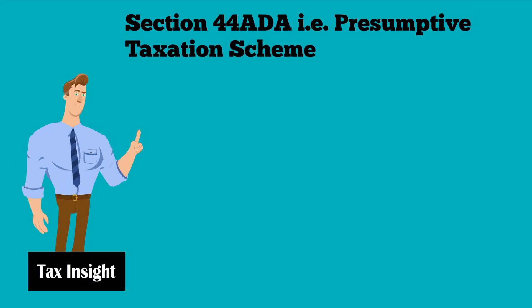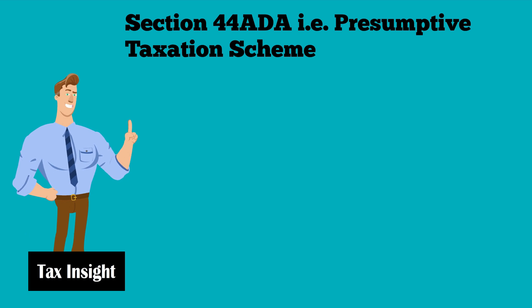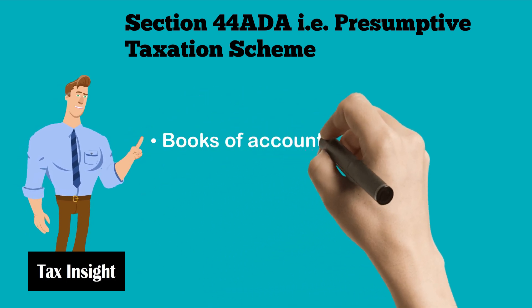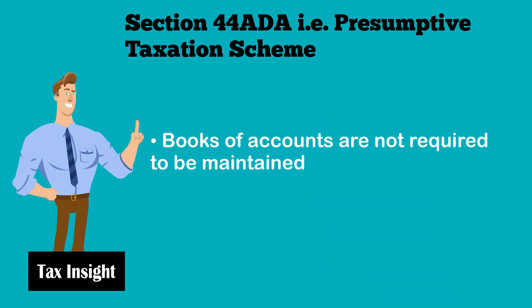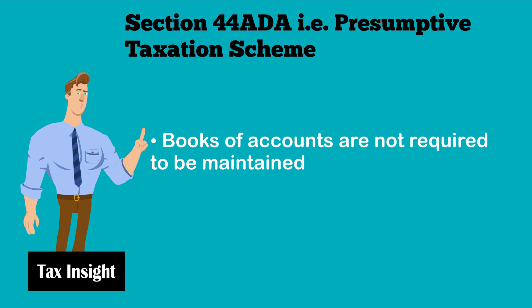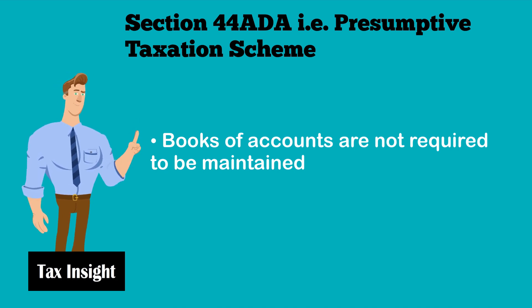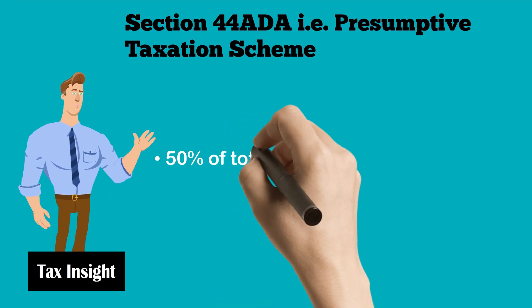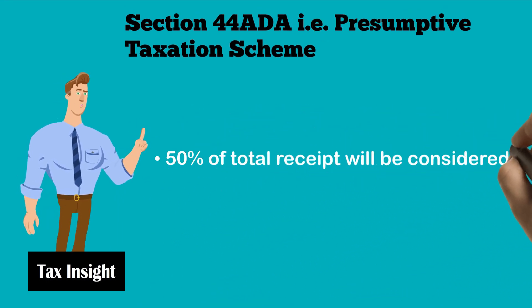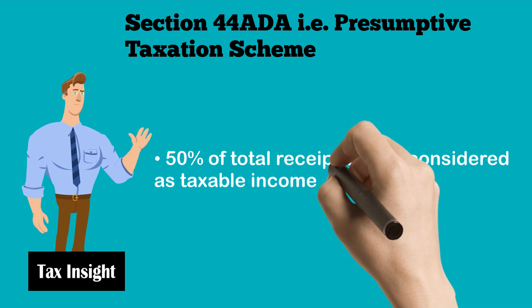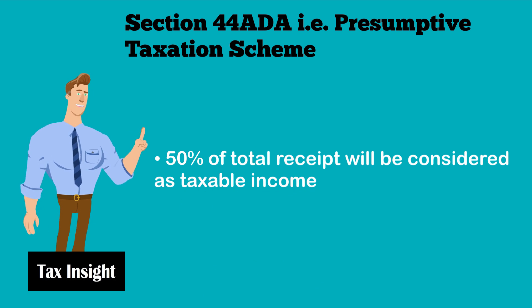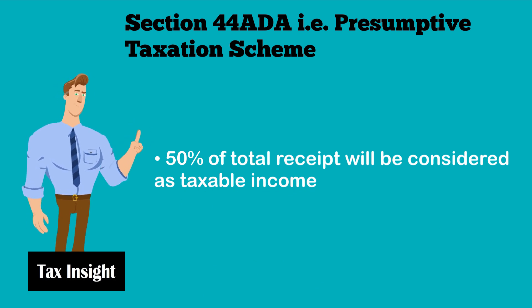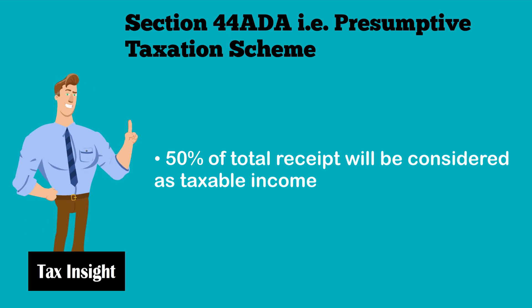Presumptive taxation scheme under section 44ADA: Books of accounts are not required to be maintained. For section 44AA, if net profit exceeds ₹1,20,000 or total receipt exceeds ₹10,00,000, then books of accounts are required to be maintained. Under the presumptive scheme, 50% of total receipt will be considered as taxable income. Without maintaining the record for any actual expenses, 50% of total receipt will be allowed as deduction.